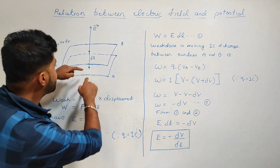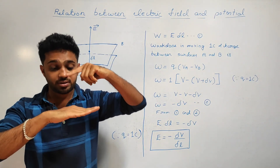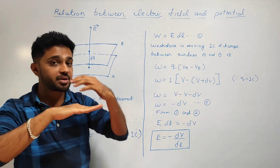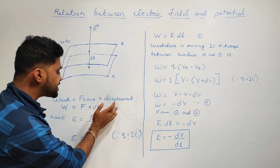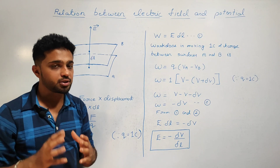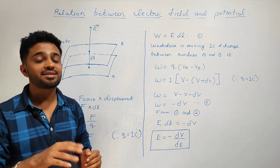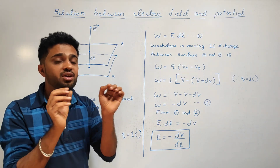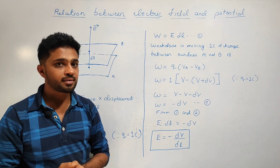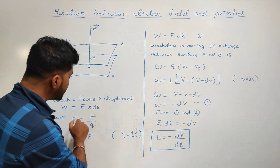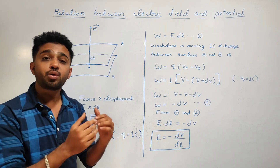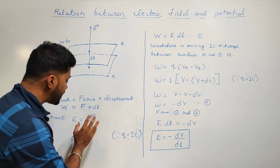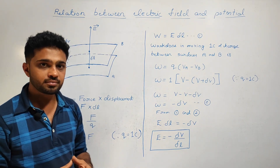The perpendicular distance between the two surfaces A and B is delta L. So displacement equals delta L. The equation is E equals F divided by Q.